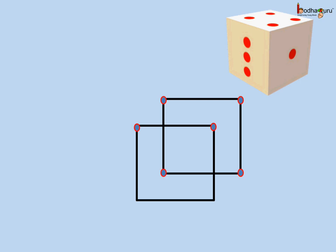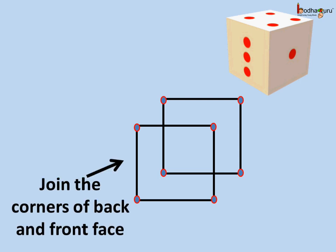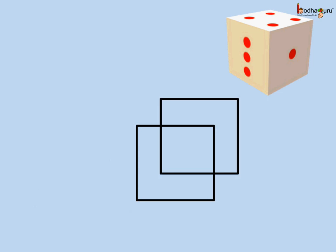Now here, we can see all the eight corners of the cube, which are shown by the blue dots. Now, let's join the corresponding corners of the front and the back side by straight lines. This is how it looks after joining the corners of the back side and the front side.